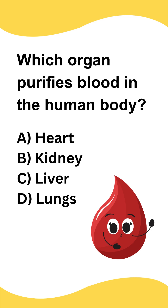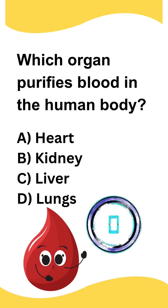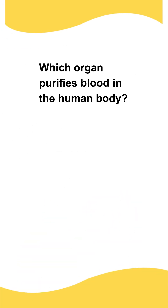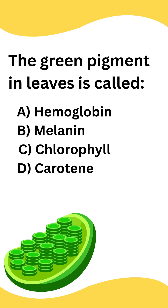Which organ purifies blood in the human body? A) Heart, B) Kidney, C) Liver, D) Lungs. The correct answer is option B: Kidney and C: Liver.